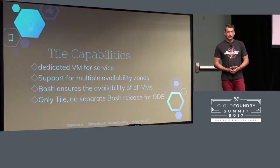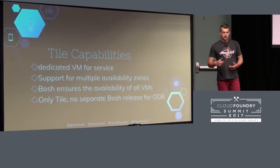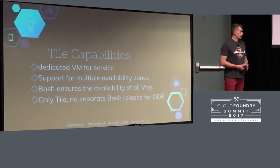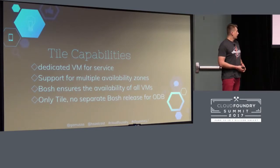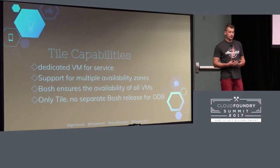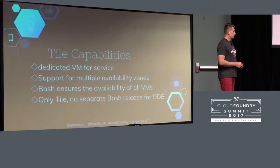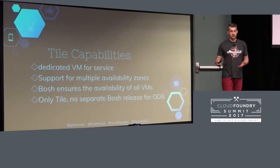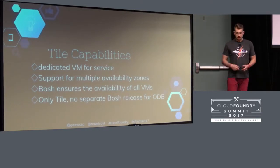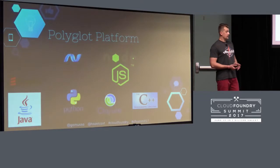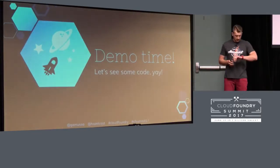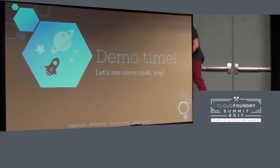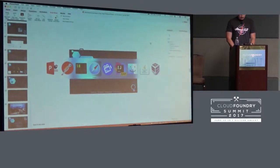Today we're going to use Hazelcast deployed in Pivotal Cloud Foundry using the Hazelcast tile developed for PCF. The tile allows you to start individual nodes of a Hazelcast cluster on individual VMs. I'm running this PCF in Amazon Web Services. Multiple availability zones are supported out of the box in the tile, BOSH is used for high availability of nodes, and it interacts with an on-demand broker, so no pre-provisioning of nodes is required.